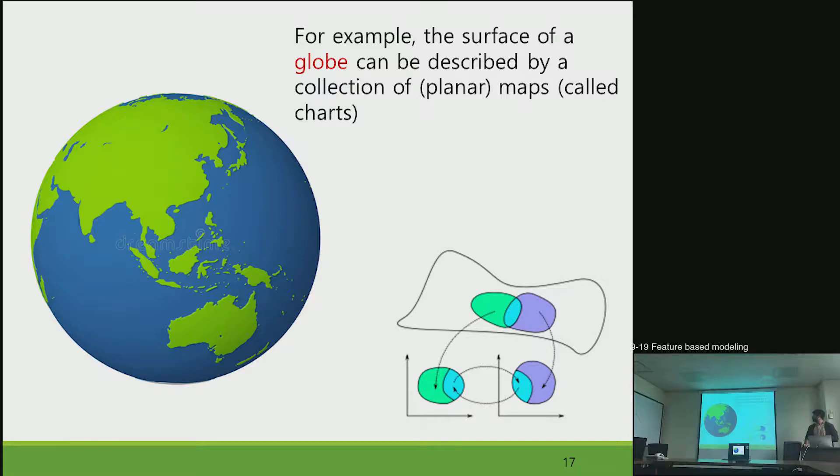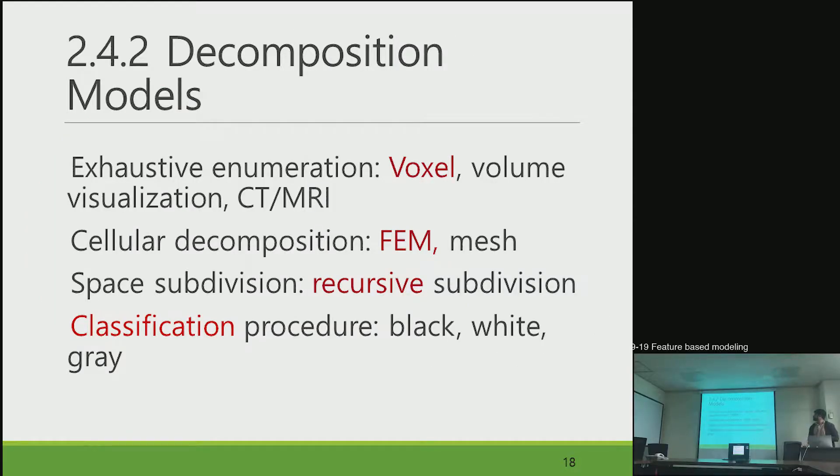Next I come to the decomposition models. As I have already explained, voxel and volume visualizations. But CT scan, it uses x-rays for image generation. Whereas MRI uses magnetic fields and radio frequency pulses to produce detailed pictures.